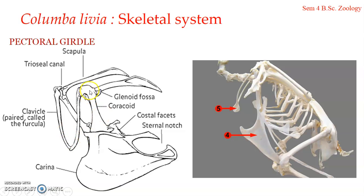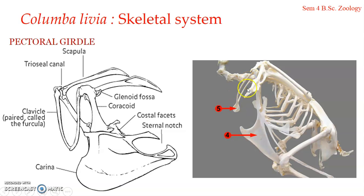To summarize, the pectoral girdle is composed of the scapula, the coracoid, and the clavicle. The scapula extends almost parallel to the vertebral column; the coracoid extends downward and connects with the sternum; and the clavicle fuses with its counterpart on the other side to form the V-shaped furcula. The hypocleidium region is connected to the rostrum of the sternum by a ligament.